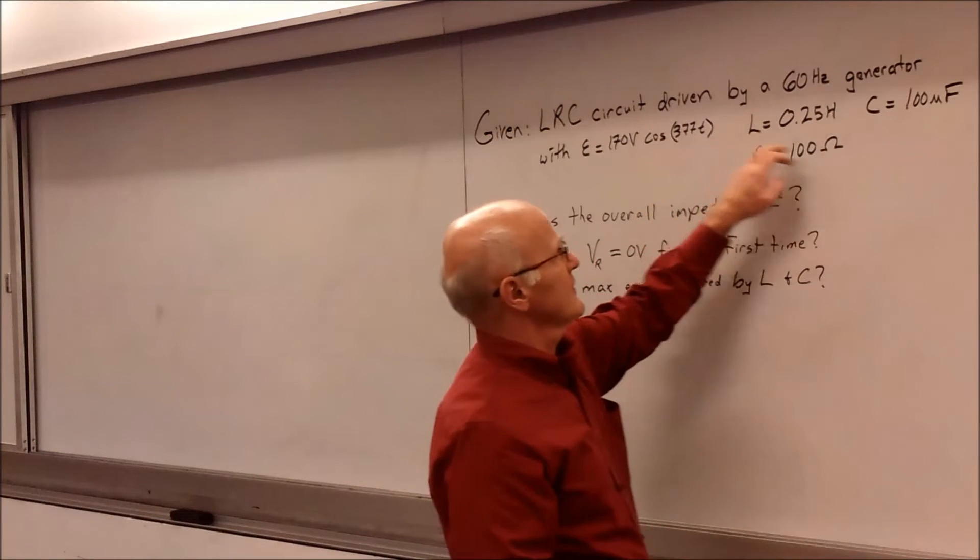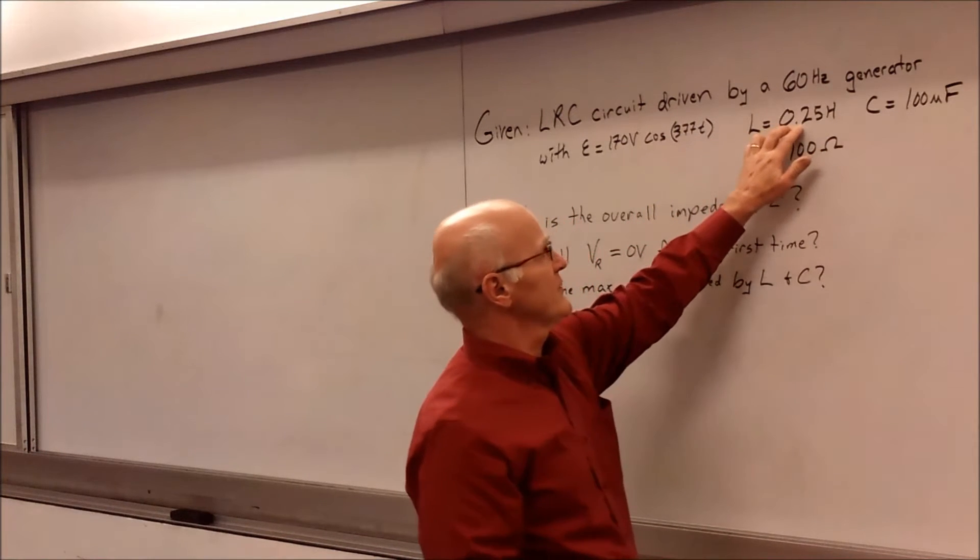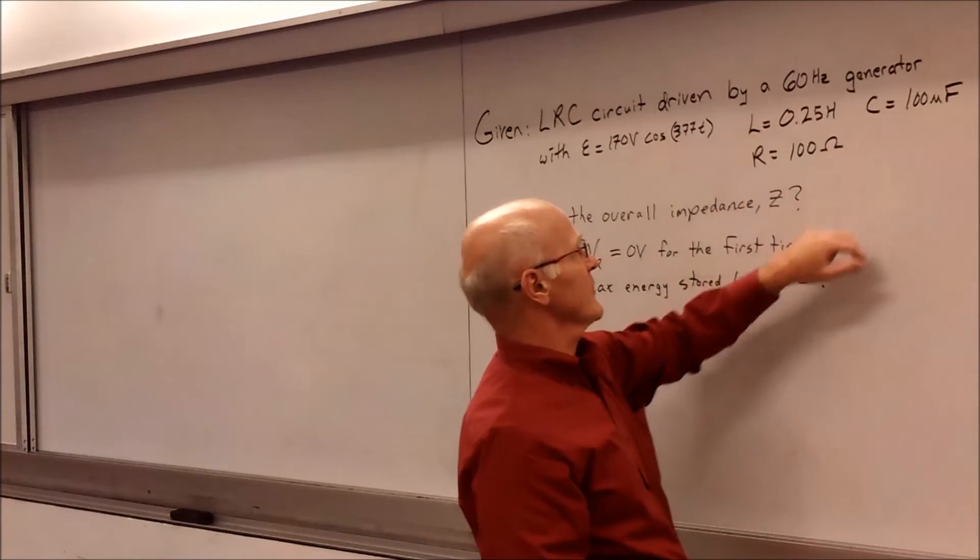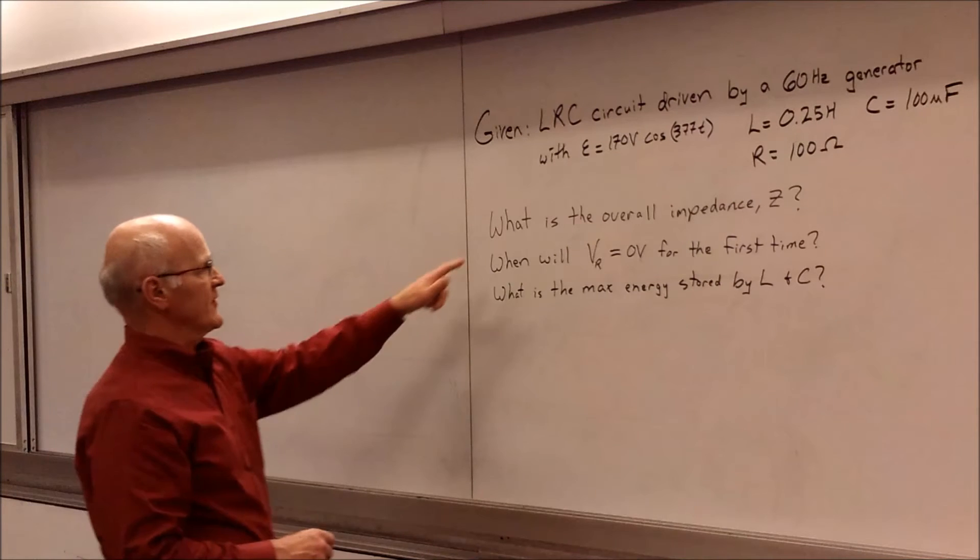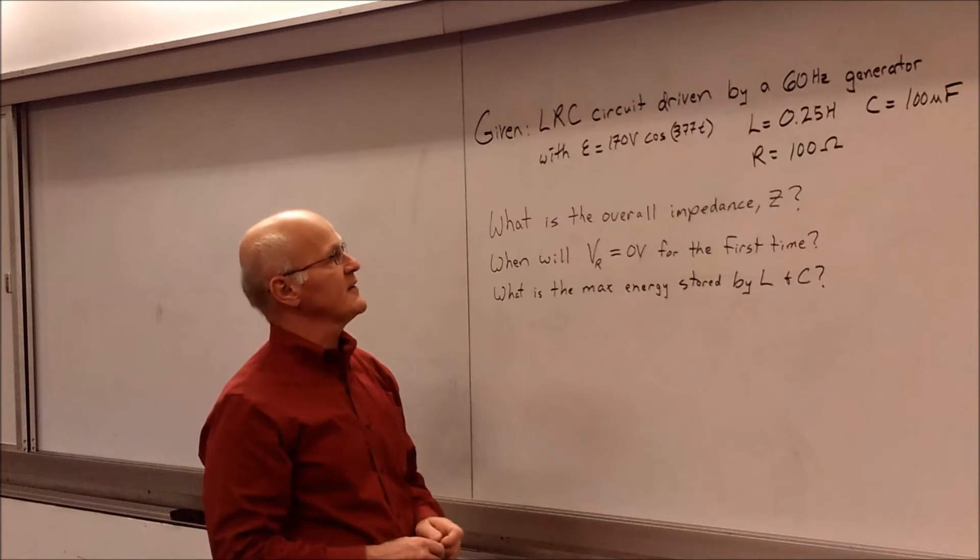And then we have an inductor, a resistor, and a capacitor. Inductor is 0.25 henrys. Capacitor is 100 microfarads. The resistor is 100 ohms. And so the first question is, what is the overall impedance, Z, for this circuit?